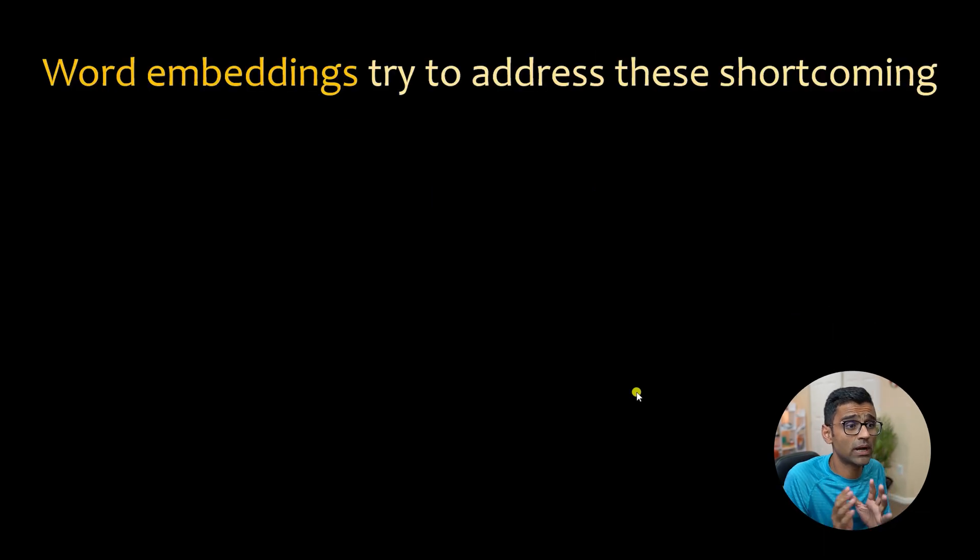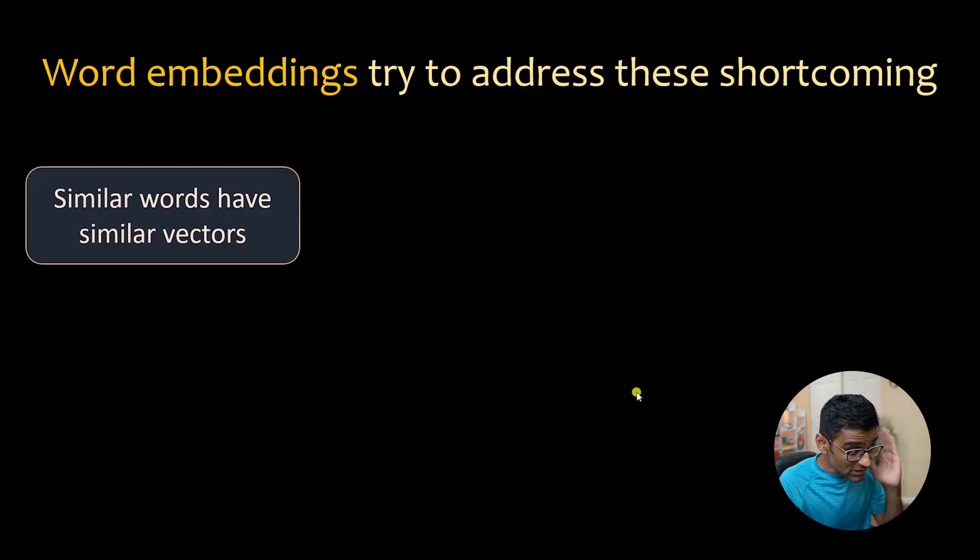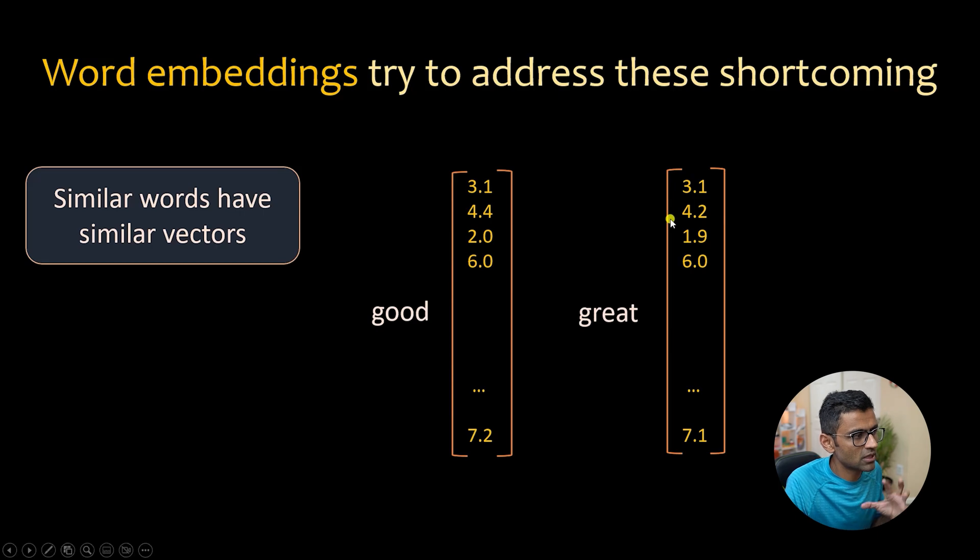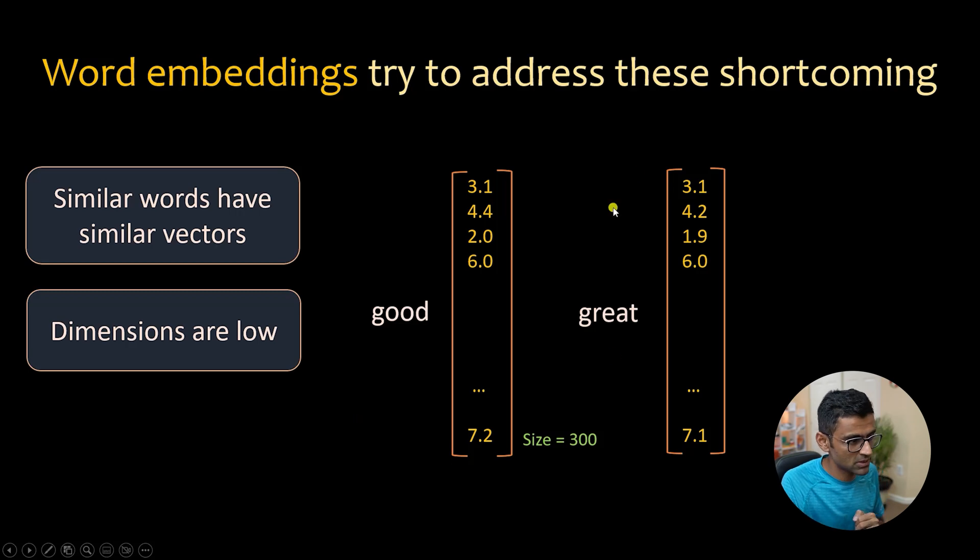Word embedding tries to address both of these shortcomings. First, similar words will have similar vectors - similar words or even sentences. For example, good and great are two similar words. When you use word embedding you will notice that their vector will be very similar. See 3.1, 3.1, 4.4, 4.2 - there will be slight differences but mostly they will be similar. They will also be lower in dimension, which means the size of this vector will be 300. 300 is one of the popular vector sizes in word embeddings. It could be 50 size, 100 size, etc., but it won't be like 100,000 because your vocabulary size is 100,000. And these representations are dense representation, meaning you won't notice too many zeros as opposed to the previous techniques where most of the values in the vectors were zero.